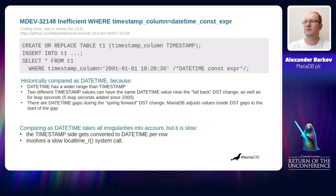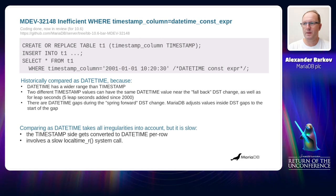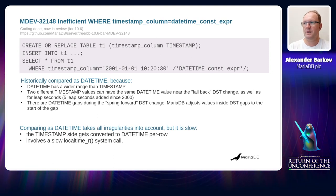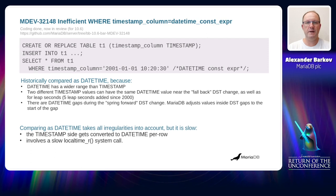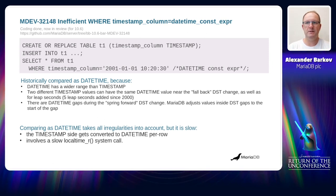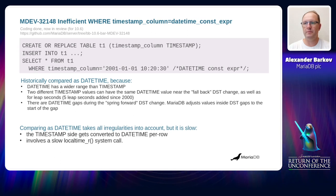The first optimization task improved performance in cases when we compare a timestamp column to a datetime constant expression. Historically, datetime is compared to a timestamp as datetime. Because datetime has a wider range than timestamp, two different timestamp values can have the same datetime value near the daylight saving time change and near leap seconds. Also, there are datetime gap values during the spring forward DST change, and MariaDB adjusts these values inside DST gaps to the start of the gap.